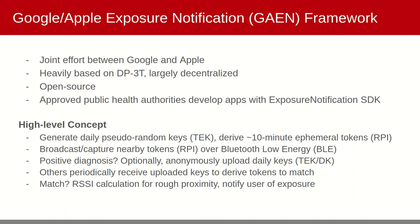The high-level concept of GAEN is as follows. Smartphones generate daily pseudorandom keys known as temporary exposure keys, or TEKs, then roughly every 10 minutes derive an ephemeral token to broadcast, known as a rolling proximity identifier, or RPI. These RPIs are then broadcasted and captured over Bluetooth low energy. Upon a positive diagnosis, users can elect to anonymously upload their pseudorandom keys to a public health authority server. Other users' smartphones will periodically receive these anonymous keys and use them to derive tokens to match with those they've already captured. If there's a match and it meets an encounter threshold with time and RSSI, the user is notified of a potential exposure.